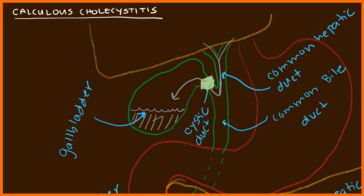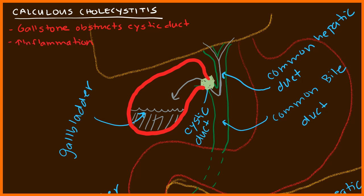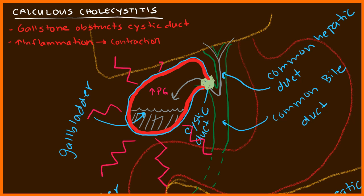In calculous cholecystitis, the first thing that needs to occur is a gallstone obstructing the cystic duct. Once this obstruction happens, it leads to inflammation along the wall of the gallbladder. Whenever you have inflammation, you get edema — pericholecystic fluid surrounding the gallbladder. Specific to the gallbladder, you also get an increase in prostaglandins, which leads to increased contraction against the gallstone, inevitably causing significant pain. This is where the pain from cholecystitis comes from.